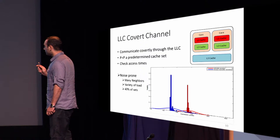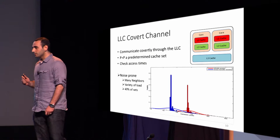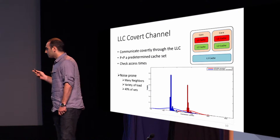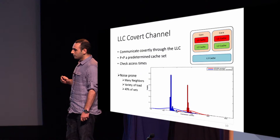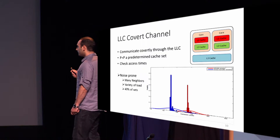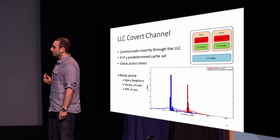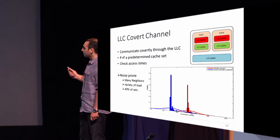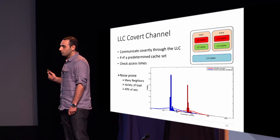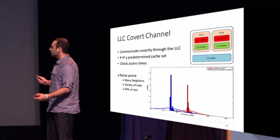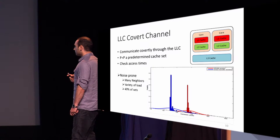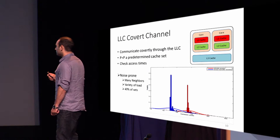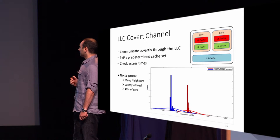Drawbacks of this covert channel: it is noise-prone, since we are operating in a public cloud with many neighbors. On the instance type we used — a 10-core machine with 20 threads running in parallel — we had up to 20 co-located neighbors. The variety of their load makes noise hard to filter; one neighbor could be running an Apache web server while another is doing media streaming. We observed that 40% of last-level cache sets are highly noisy and not suitable for easy communication.